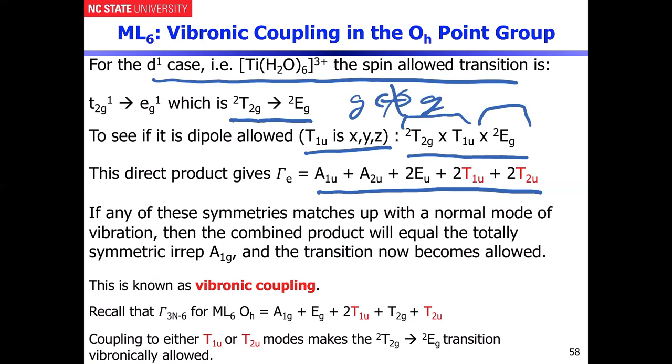The only way to get a non-zero answer would be for that direct product to basically give you A1G. Unless that happens, there's no other way to fix this problem. What you do next is figure out what the normal modes of vibration are for the ML6 complex here. You can do that by doing a full-blown coordinate analysis of the molecule, pull out the rotations and the translations. The remaining degrees of freedom are all going to be normal modes of vibration.